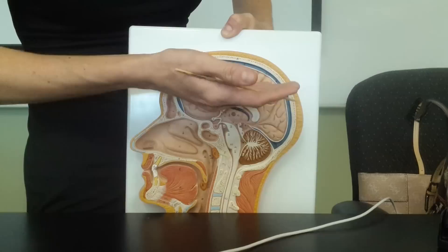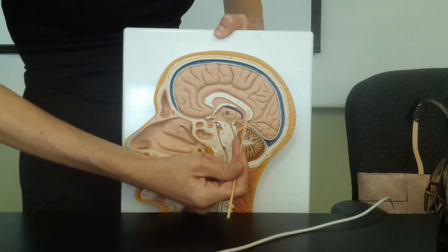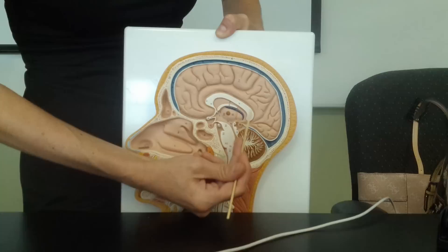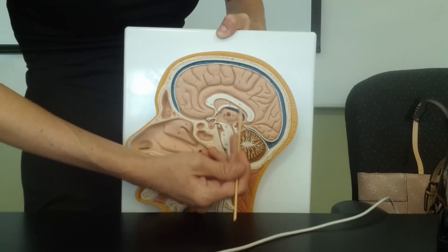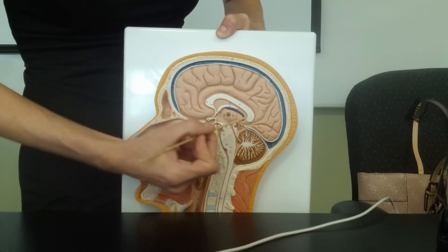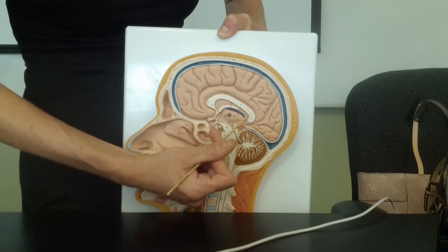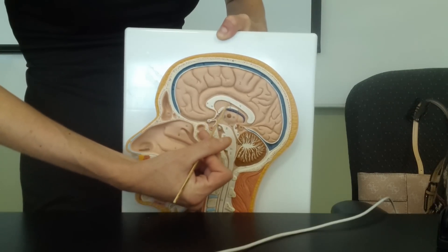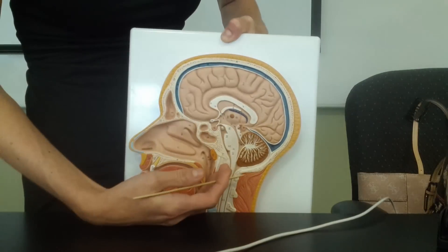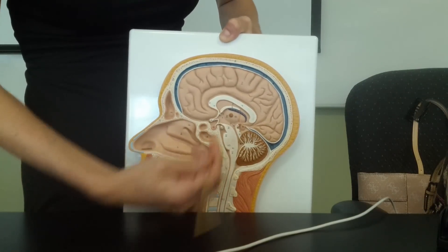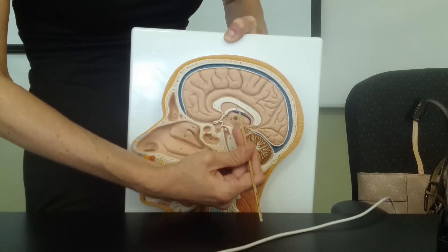If we look above the thalamus, we see projections that include white matter or myelinated axons. This large projection right here is called the corpus callosum — those are fibers that connect the left and right hemispheres. Underneath this is showing us the fornix.